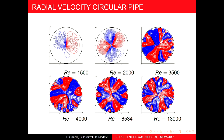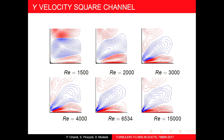Looking at the square channel, the transition is different from the pipe. At Reynolds 1500 the structure is still present. Going from 1500 to 1000, something related to the secondary motion near the corner of the square channel appears. With increasing Reynolds number, the structure does not change largely.